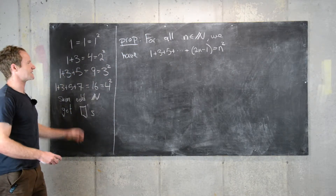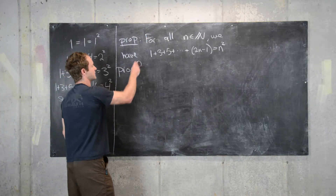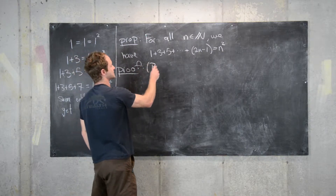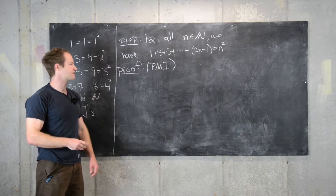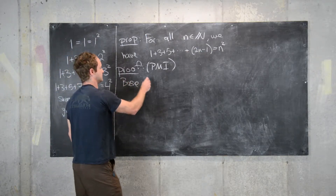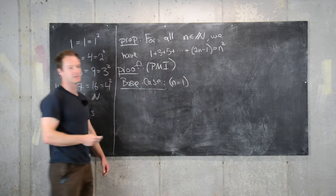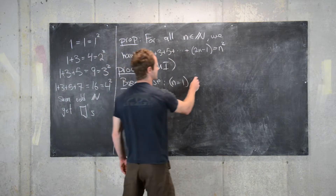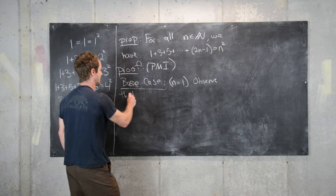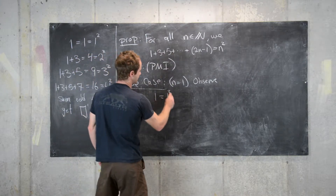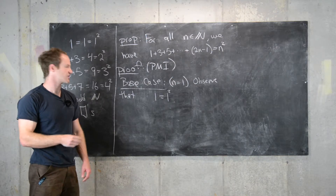Now let's look at the proof using the principle of mathematical induction. We start with the base case, which is n equals 1. We observe that 1 equals 1 squared, and that's enough for the base case.